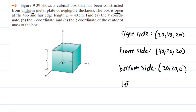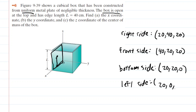Next, we look at the left side and outline it. We mark the geometrical center and figure out the coordinates. We go 20 centimeters along the X-axis, 0 centimeters on the Y-axis, and then 20 centimeters up the Z-axis. So the coordinates are 20, 0, and 20.